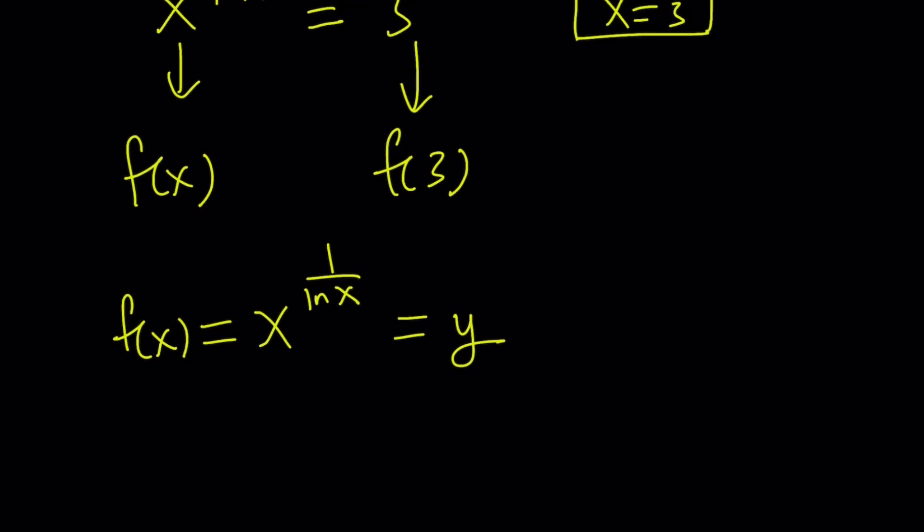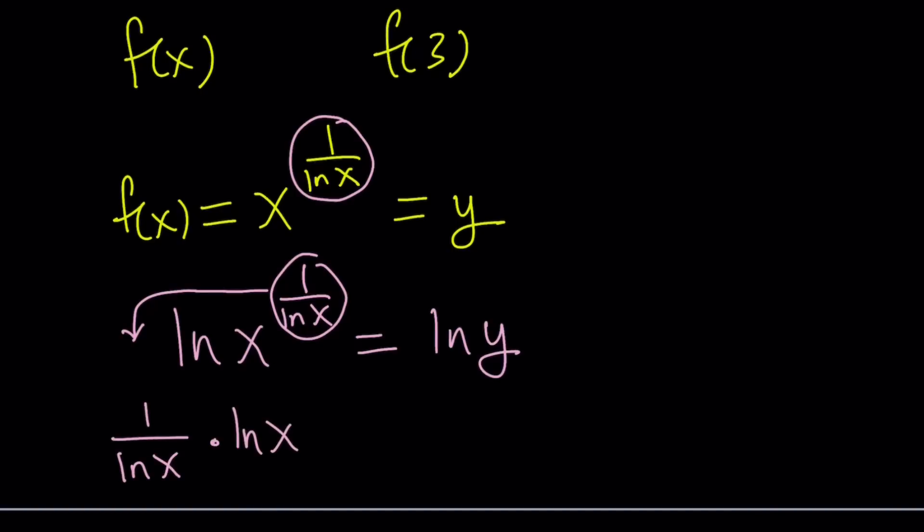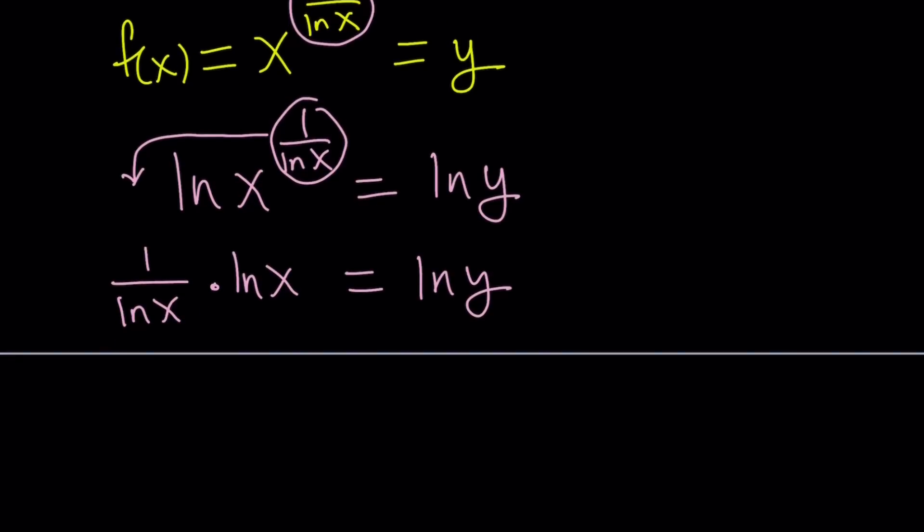f of x equals x to the power 1 over ln x. One of the things you can do is call this function y, and then ln both sides. I mean, doesn't that make sense? You want to bring this down. And the easiest way to do it is by natural logging both sides. So let's natural log both sides here. And then we're going to go ahead and move the exponent to the front or bring it down. And that's going to give us 1 over ln x multiplied by ln x equals ln y. Awesome. ln x cancels out.